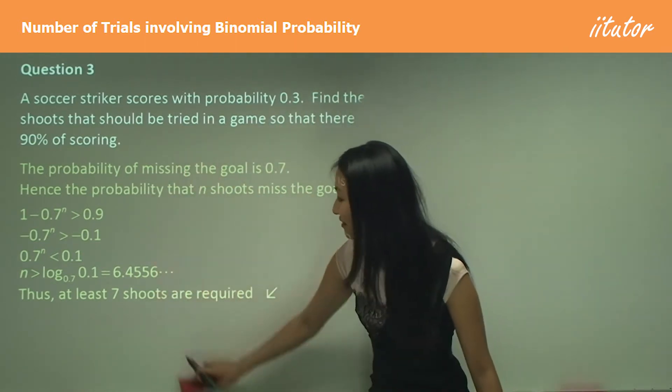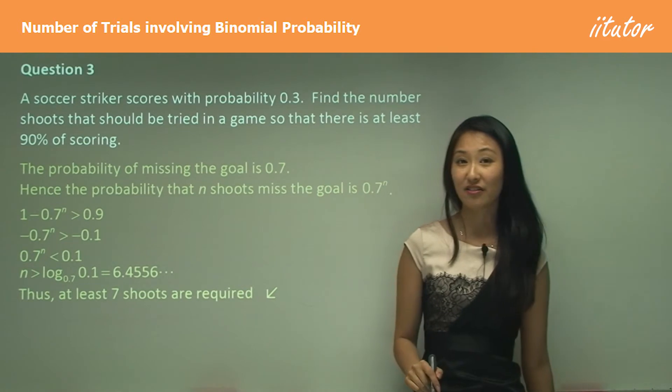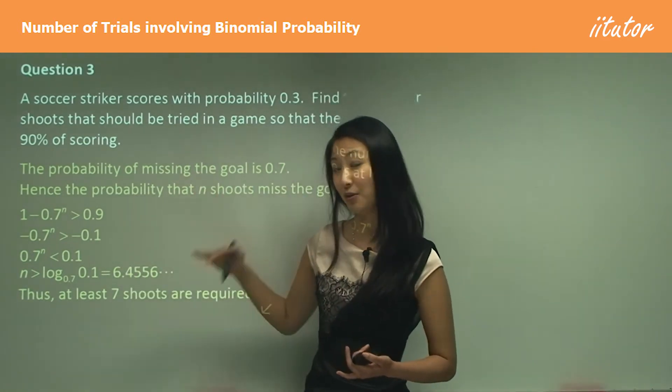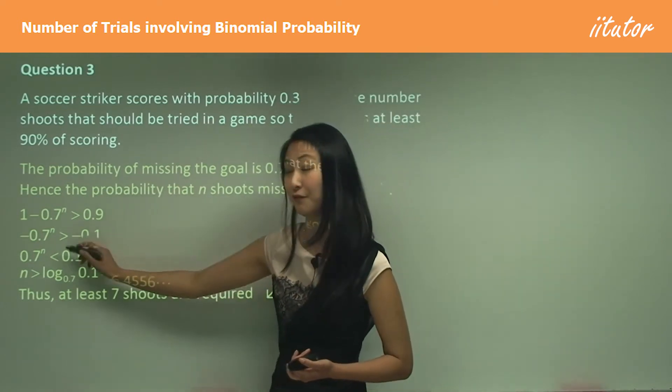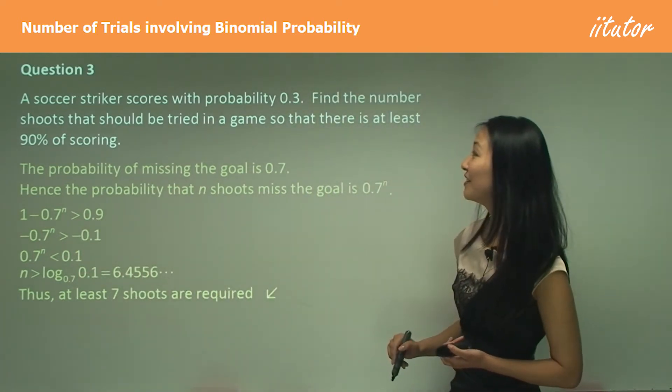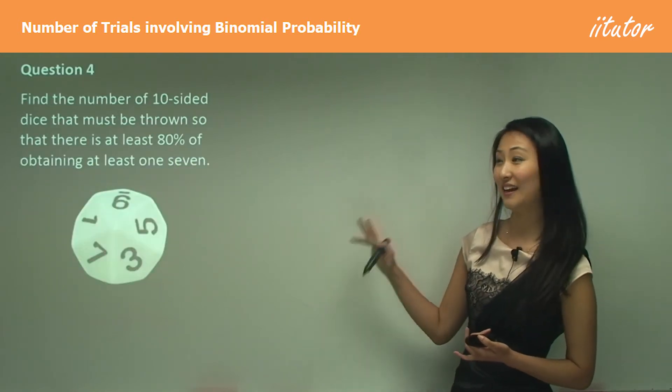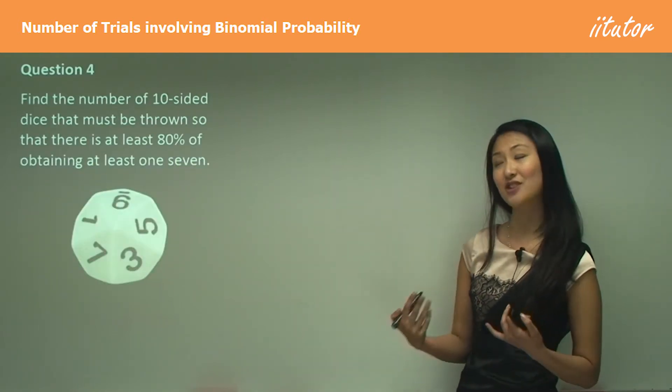Just remember, when you have log there, you need to flip the sign if it's less than 1, which is always going to be in these binomial probabilities. So just remember, flip the sign there. This is what we found out for question three. Let's have a look here. We're going to be working with a dice question in question four.